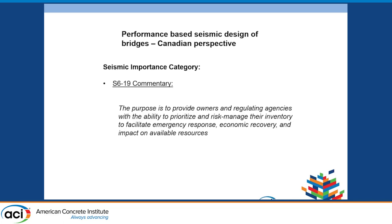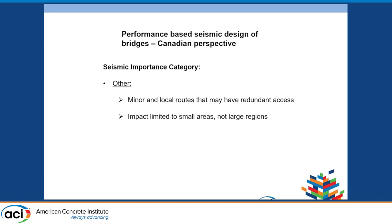The 'other' category is the lowest importance — these would be bridges on minor and local routes. They may or may not have redundant access, but the big point is that their impact would be limited to small areas, not large regions.